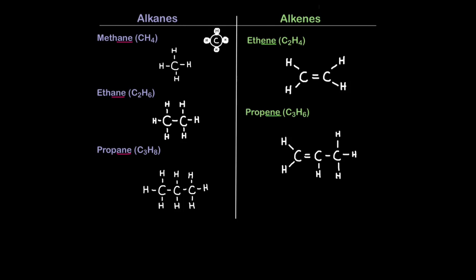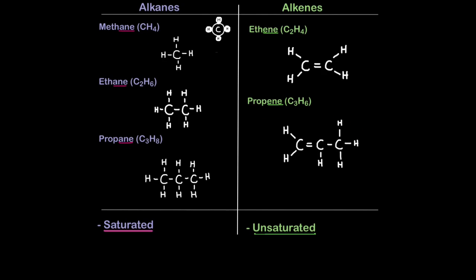Alkenes are much simpler in terms of the formula but more complex to draw. You literally just double the number of hydrogens for every carbon. Two carbons here, four hydrogens. Three carbons, six hydrogens. The only alkene they really focus on you being able to draw is propene, because it's quite complicated.